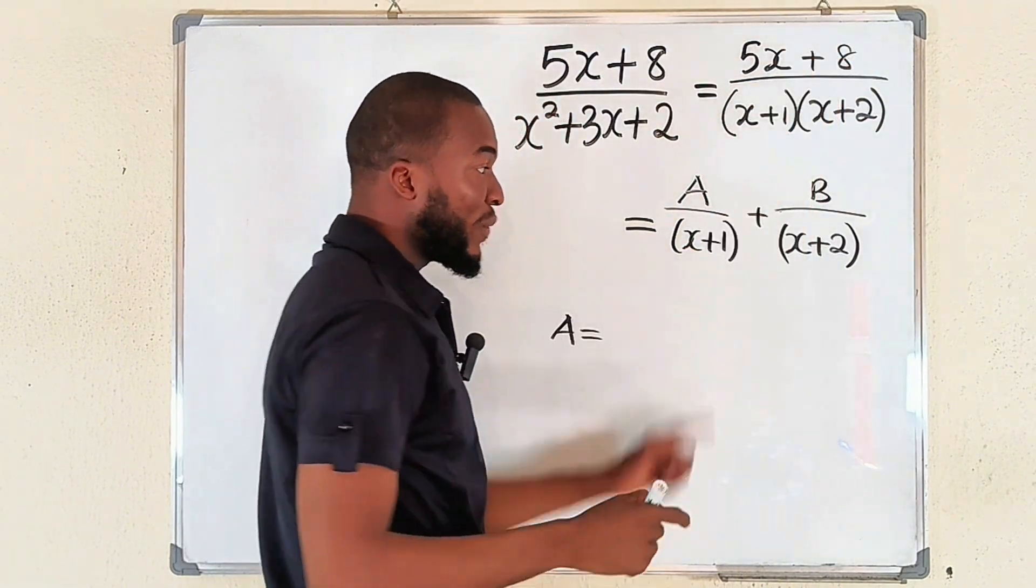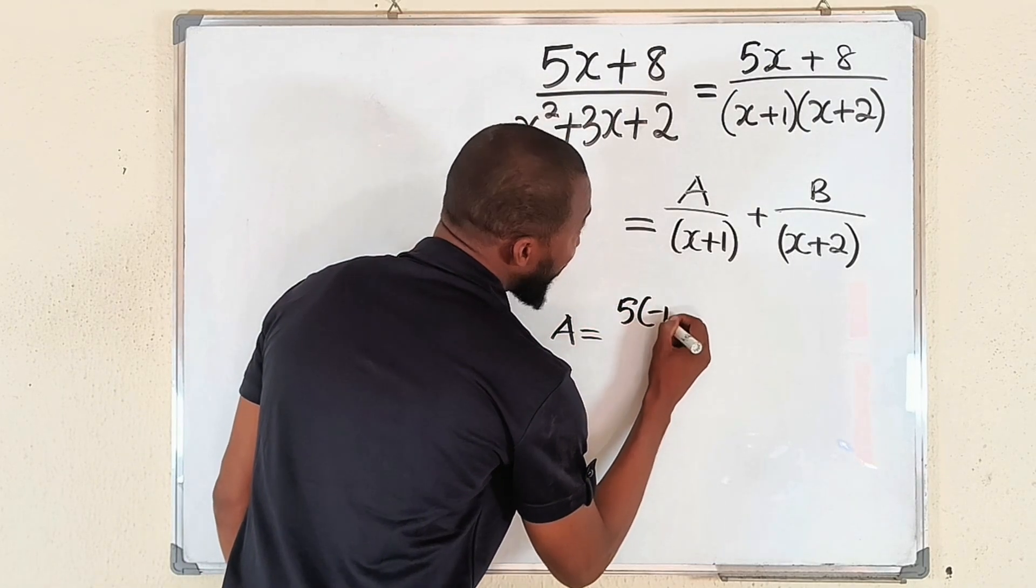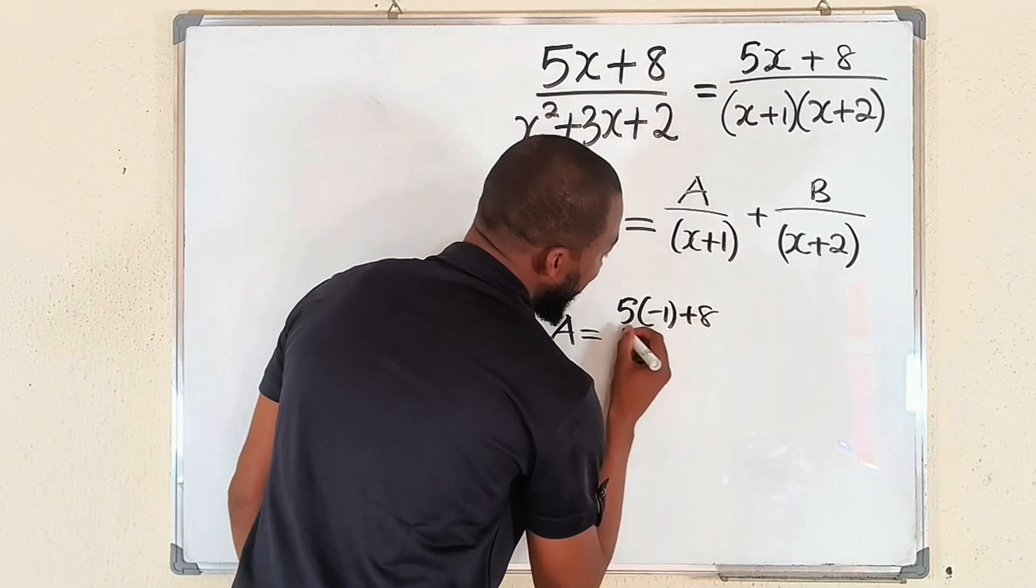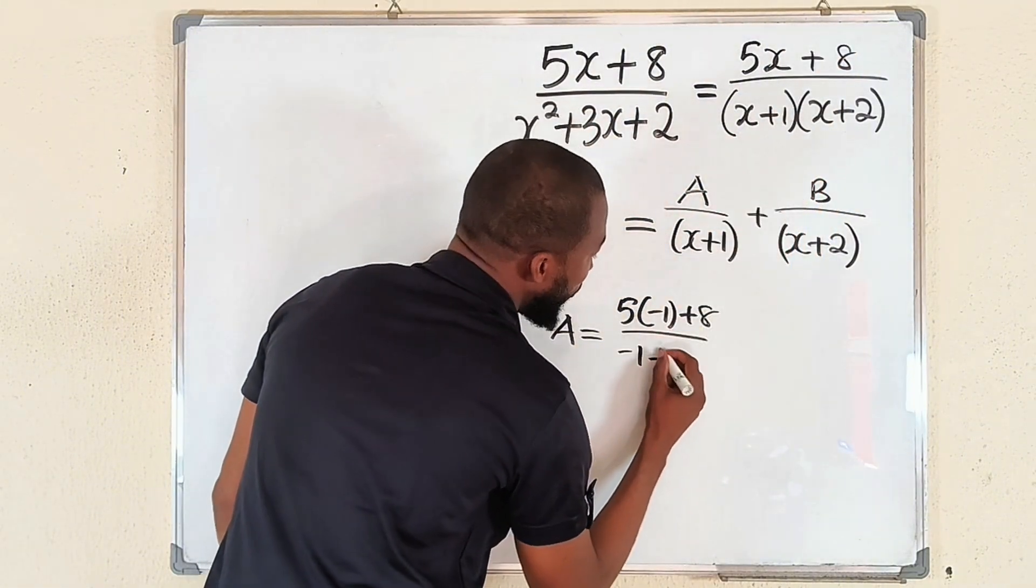So wherever you have x at the top, replace it with that negative one. So you have 5 multiply by that negative 1 plus 8, divided by - use this one - minus 1 plus 2.